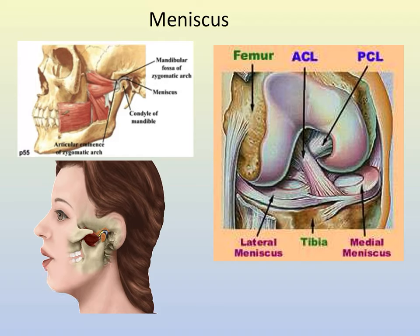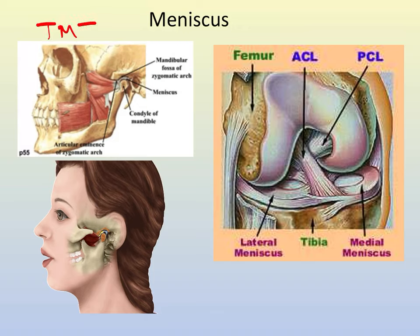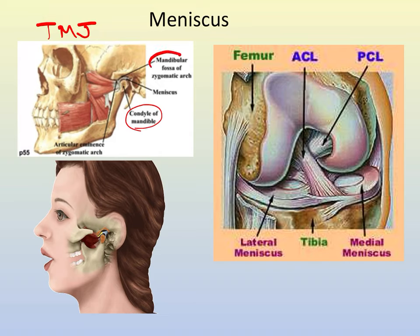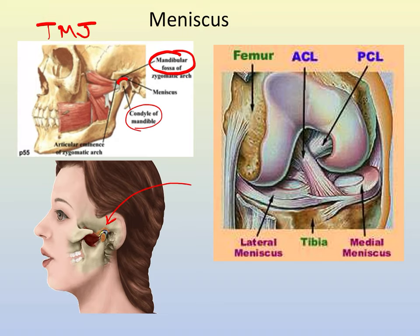Menisci — singular meniscus — are pads of fibrocartilage that help bones fit better when they form a joint. Looking at the meniscus of the temporomandibular joint (TMJ): the condyle of the mandible fits into the mandibular fossa of the temporal bone, and there is a little piece of cartilage between the two. Every time you talk or chew, there is movement here, and the meniscus helps those bones fit better so the force is distributed across the joint rather than concentrated at one spot.